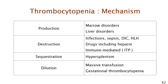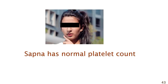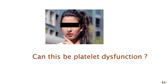You could look at the bone marrow for leukemia or aplasia, or look at destruction causes like infections, drugs, or ITP. However, this discussion of thrombocytopenia is not relevant to Sapna because her platelet count is normal. So the whole thrombocytopenia discussion does not apply to her.